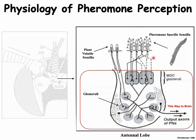To summarize: the sensilla on the outside of the antenna — some specific to pheromones, some specific to plant volatiles — both send signals down into the antennal lobe. Processing for pheromones is done differently than for plant volatiles, but there is an integration of the signal and an output to the brain of the insect.